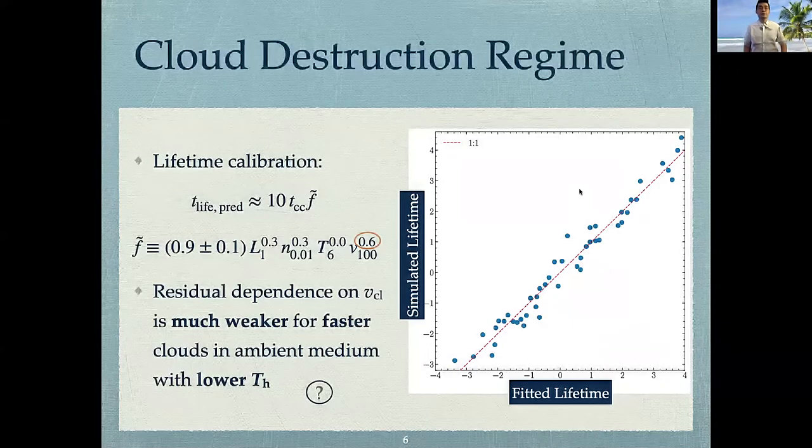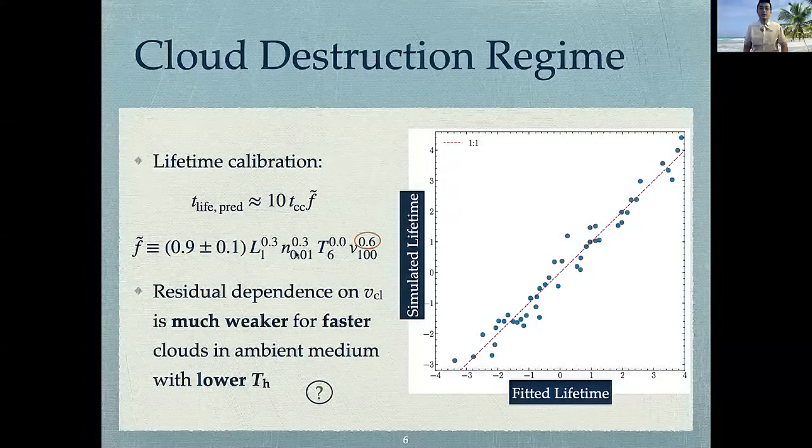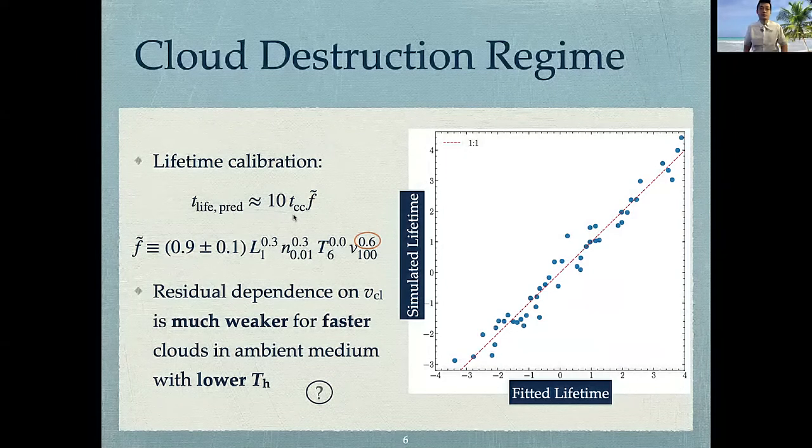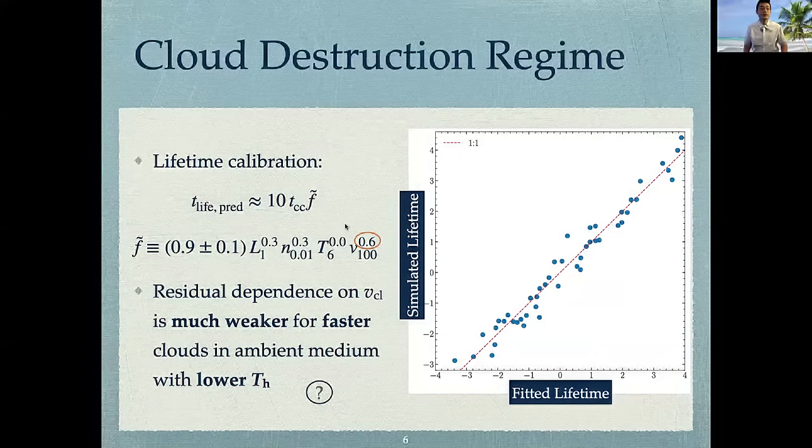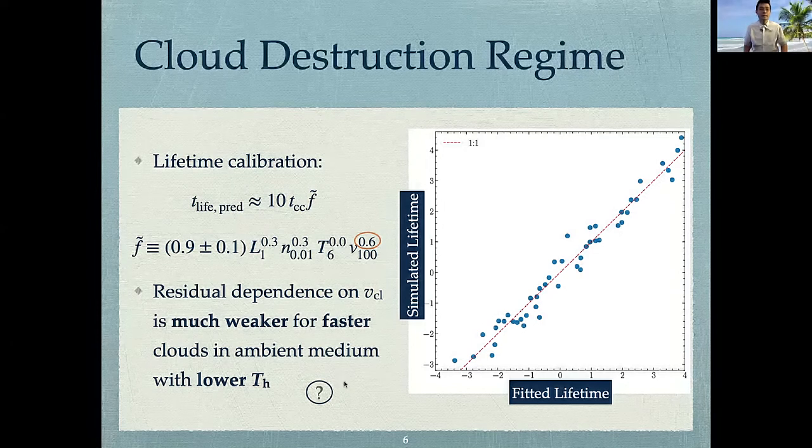So in this cloud destruction regime, we fitted our simulated cloud lifetimes to four different physical parameters, assuming power laws. And then we found that the fitted lifetimes are pretty close to 10 times the cloud crushing time, t_cc, modulo a small correction factor F_sigma. And F_sigma has a residual dependence on the cloud velocity. And we also found that this residual dependence is much weaker for clouds that have higher velocities or they are in a cooler medium. So why is that?